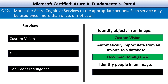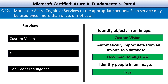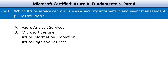The third and final action is: identify people in an image. Azure AI Face service detects and analyzes human faces in images, including identification, verification, emotion detection, and facial landmarks. If you still have any doubts about any of the options, please post them in the comments section.